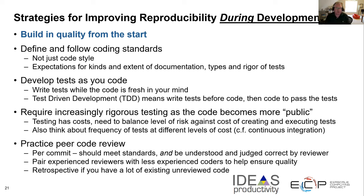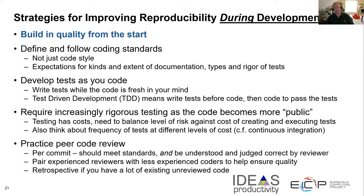Another practice is peer code review. This means getting others to look over your commit and make sure it looks correct and is understood by them. There are a lot of benefits: it gives more people an understanding of more of the code, and it's a way to help onboard less experienced coders by getting input from more experienced ones. If you have a lot of existing code that hasn't been reviewed, you should try to do it going forward — you can build a retrospective aspect where every week you review one more module of unreviewed old code.